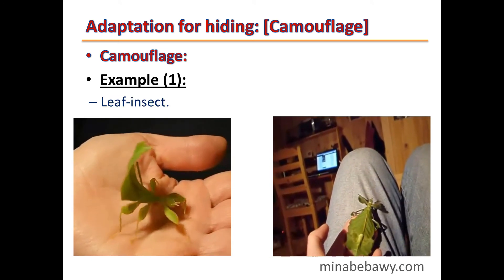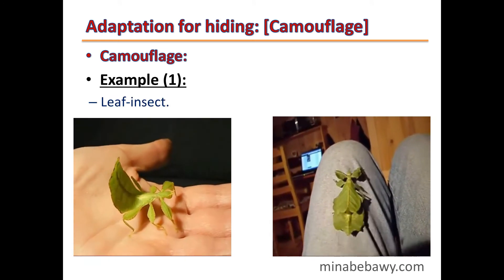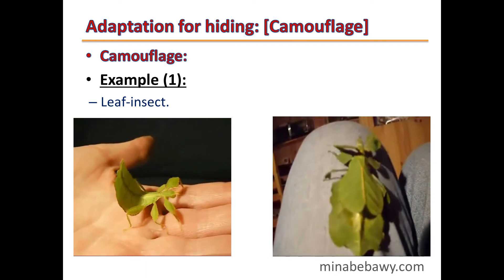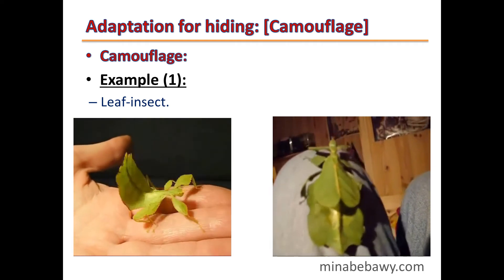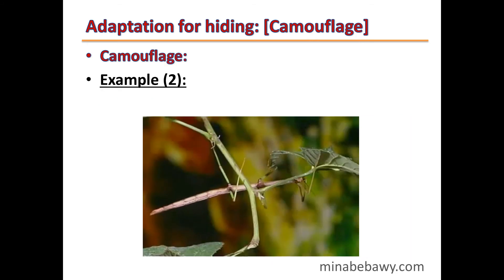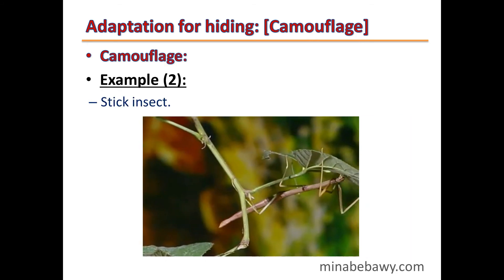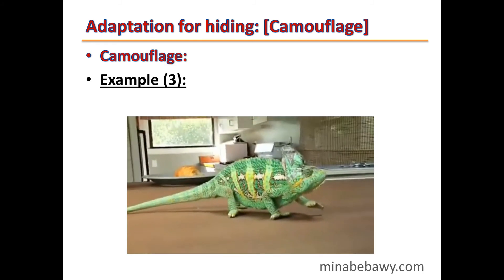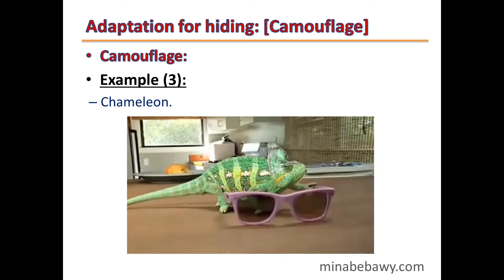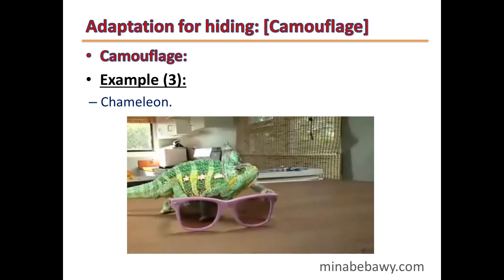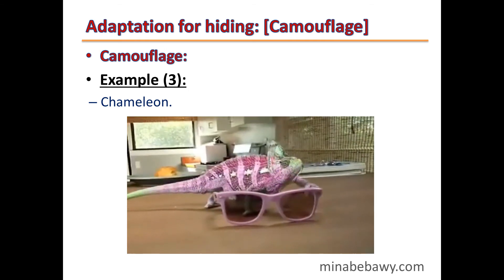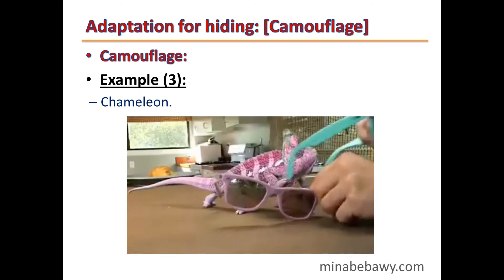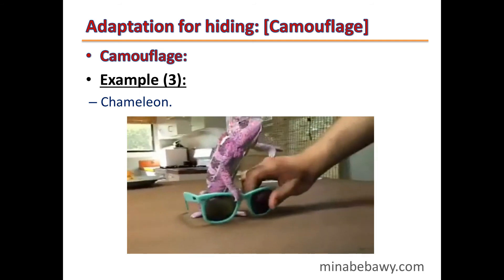Examples of camouflage include the leaf insect, which is completely similar to a leaf of a plant, and the stick insect, which is completely similar to the stem of a plant. The most famous example is the chameleon — the king of camouflage — which can change its color according to the color of the surrounding environment, as shown in the video.